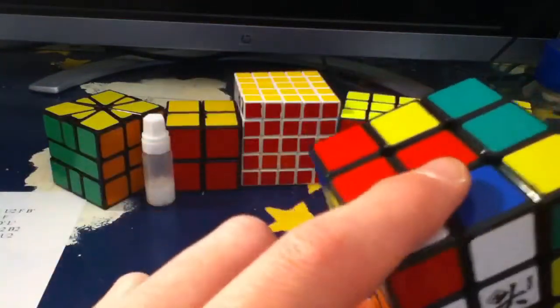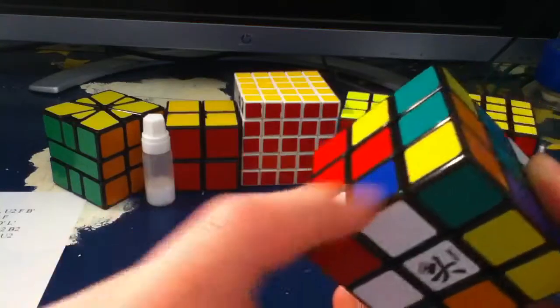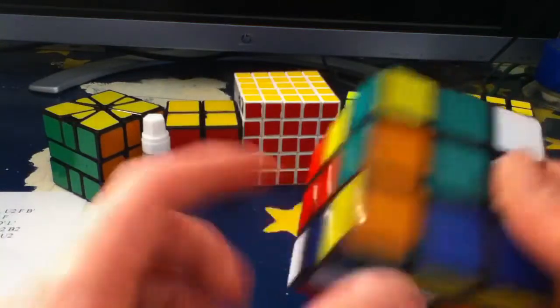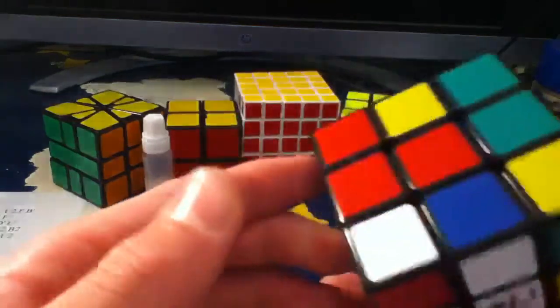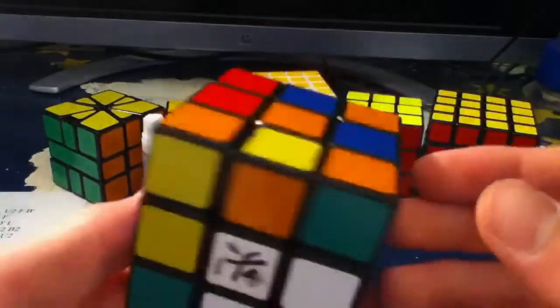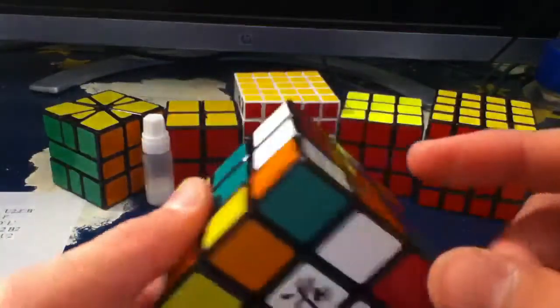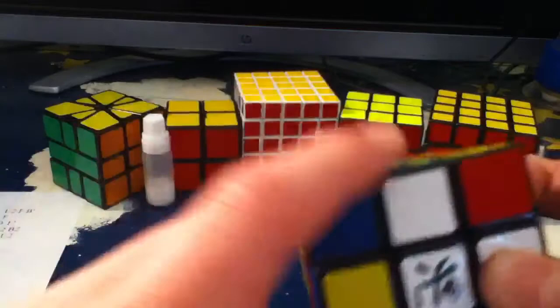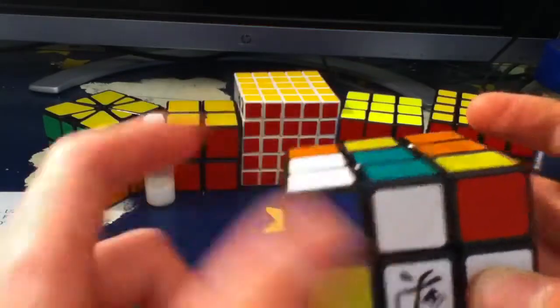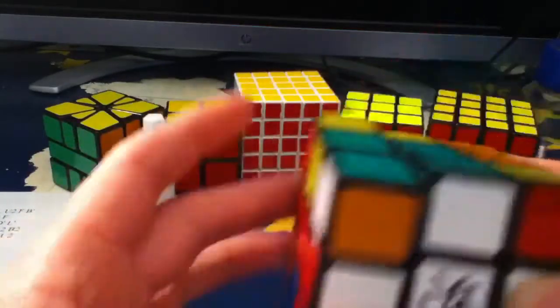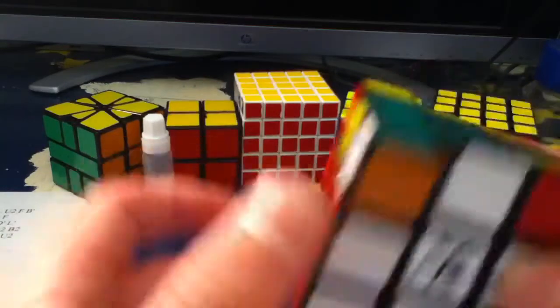Okay, this is a pretty easy cross since these two are already in the correct place. So first I'll just align those, and place this, and then place the white-red.